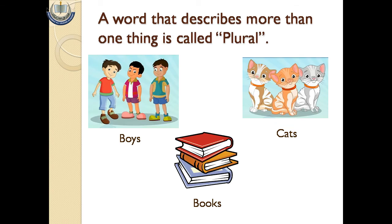A word that describes more than one thing is called plural. Aise alfaaz jo aik se zyada cheez ko zahir karein, plural kehlate hain. Plural ko hum Urdu mein jama kehte hain. For example: boys, cats, books.